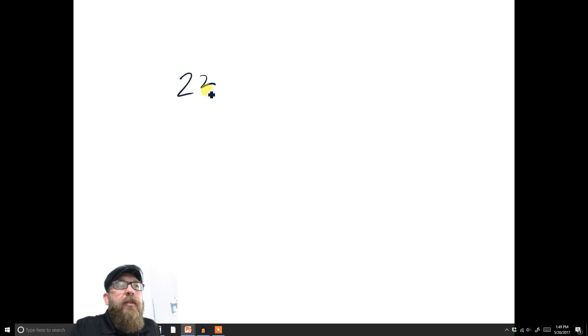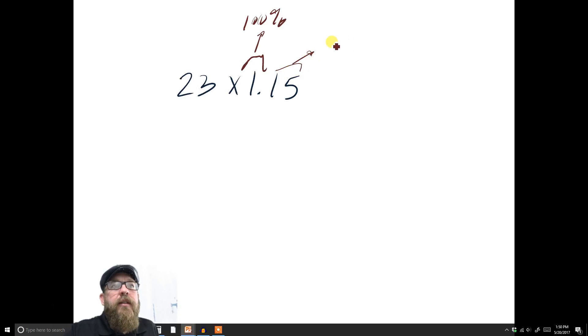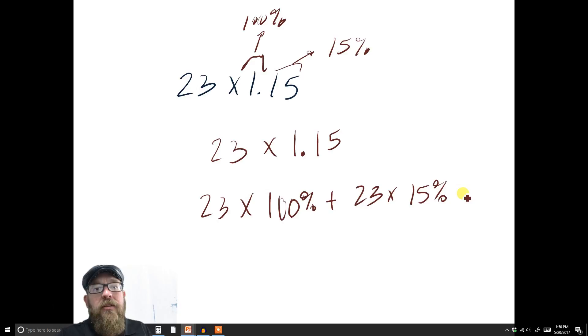I think I got something a little easier for that. If I wanted a 15% increase of 23, I could do this just like this right here. This one represents 100% of the 23, and the 15 right here is the 15% increase. So when you do 23 times 1.15, that's really like 23 times 100% plus 23 times 15%. A little quicker, a little easier, and we're going to be using that here.